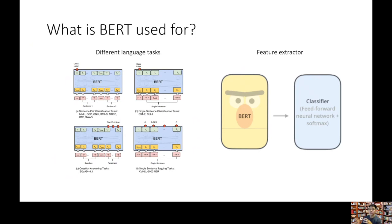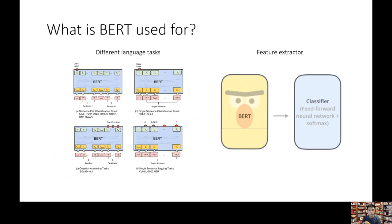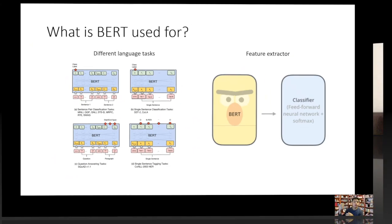BERT can also be used as a feature extractor. We feed it words and it gives us a numerical representation of those words that is context-aware because of how BERT is set up. We then feed those numerical representations to a classifier.